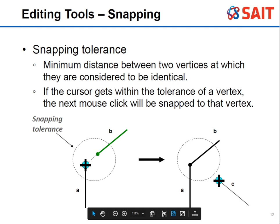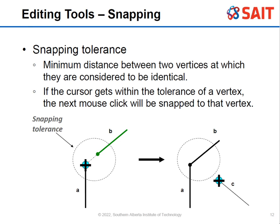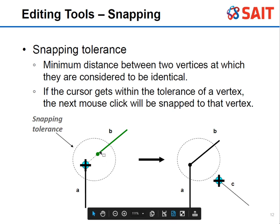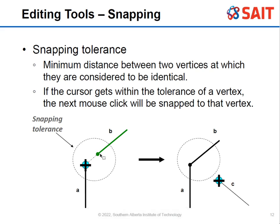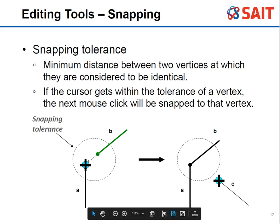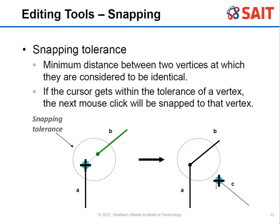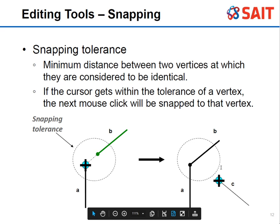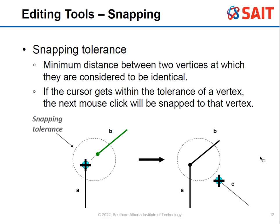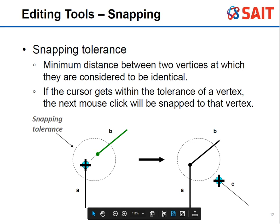There is a snapping tolerance that you can set — this is the minimum distance between two vertices to determine whether they should come together. For example, if two points are within the tolerance circle, they'll snap together. But if a point is outside that circle, it won't snap. When the cursor gets within the tolerance, the next mouse click automatically sends it there and you'll see it change shape on screen. If it's snapping too much, turn it off or decrease the minimum distance.